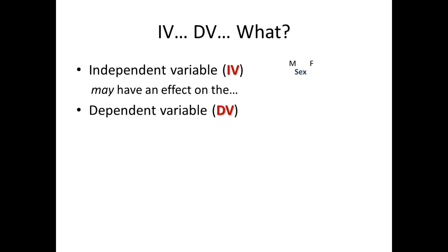Let's say that you have a variable of sex. A person's sex might cause them to answer another question differently. Males might answer whether their math skills are better than average, average, or less than average differently than females might. So we're determining whether somebody's math skills are dependent upon their sex — assessed as good or bad. Note that being male or female does not cause a difference in math skill assessment, but they may be correlated with each other.